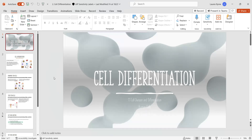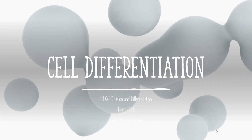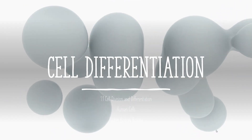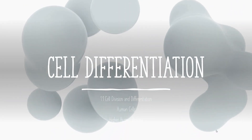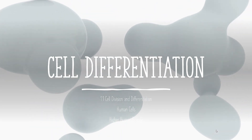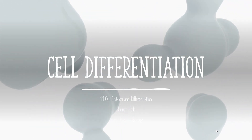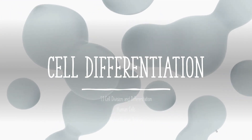This is a video in the series breaking down the human cells unit, and this time we're going to look at cell differentiation — again from key area 1.1, all about cell division and differentiation, part of the Higher Human Biology course.